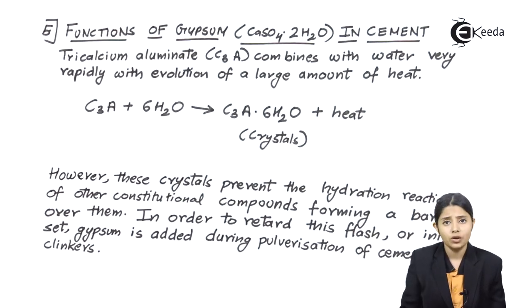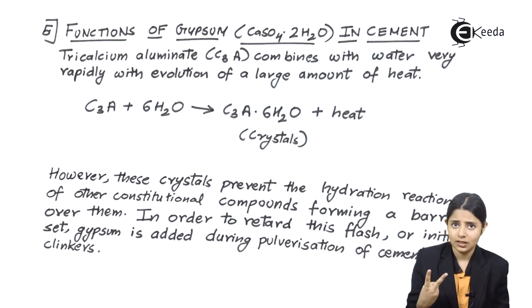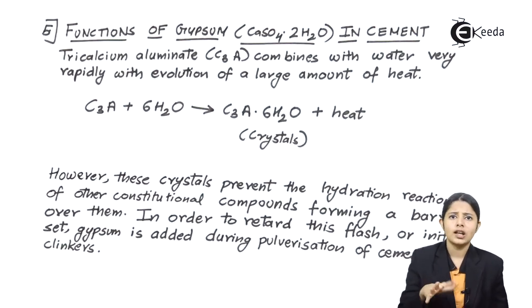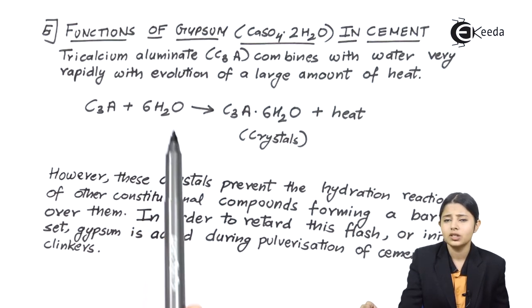So C3A plus 6H2O forms C3A dot 6H2O. Now this dot 6H2O helps in the production of crystals. Again as I said it is very important for a cement to have two things. The first is gel and the second is crystals. Well it got its gel like formation with the help of silica present in it. Now it will get its crystals with the help of gypsum present in it.